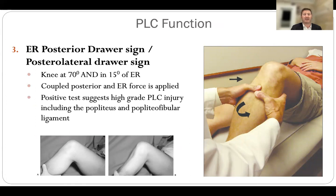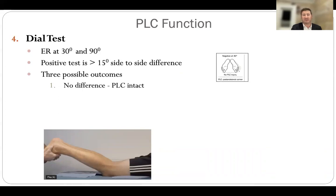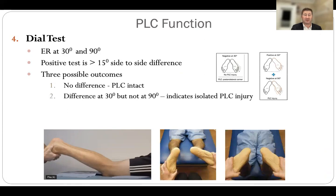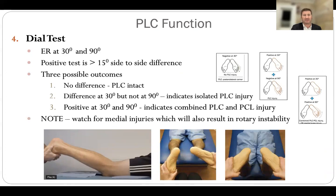The external rotation posterior draw sign is done at 70 degrees of flexion — the foot is steadied and the tibia is placed in 15 degrees of external rotation. An anterior and posterior draw is then applied as a combined posterior and external rotation force and compared to the other side. The dial test is performed with the patient prone; external rotation is measured at 30 and 90 degrees. A positive test is more than 15 degrees of side-to-side difference.